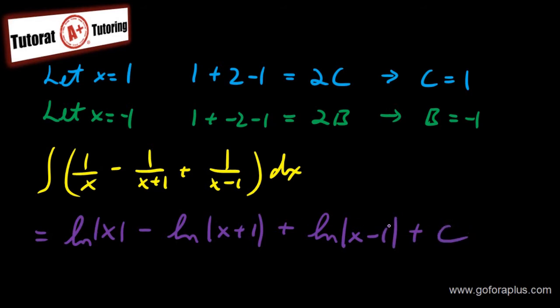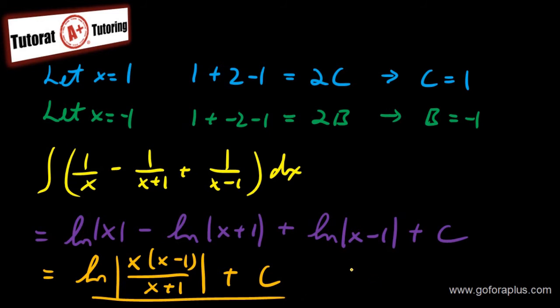You can group all that together because it's all ln. So I have ln of x times (x minus 1) over (x plus 1) absolute value plus C. And this is my final answer for this question. For more information about partial fractions, please visit my website go4aplus.com.